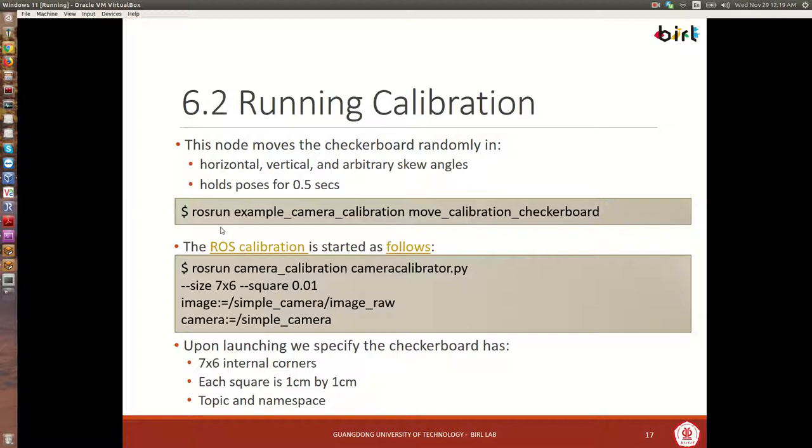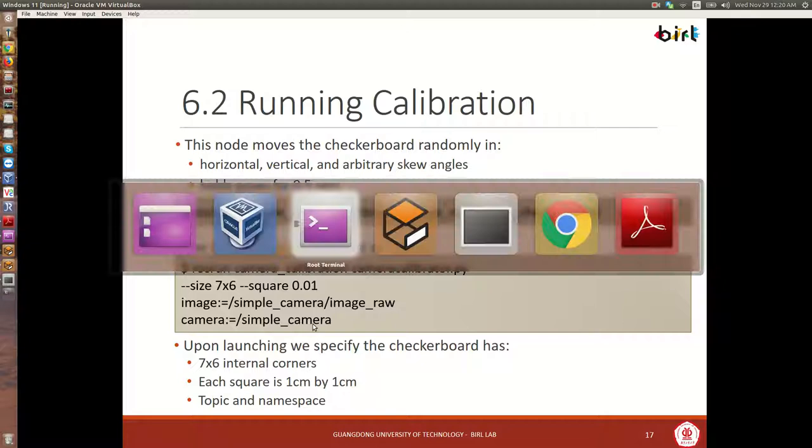So now we're ready to run calibration. Right now, our running node is moving the checkerboard randomly, horizontally, vertically, and with arbitrary skew angles, and it's holding each pose for 0.5 seconds. To start calibration, we're going to run this camera calibration package, camera-calibrator.py script. And this is going to be using OpenCV, but it needs a few arguments. Number one, we need to give the size of the checkerboard in terms of the number of points inside the checkerboard. We need to provide the dimensions of each of those squares. And then we need to give it the name of the image raw topic and the namespace for the camera, which is going to be simple camera.